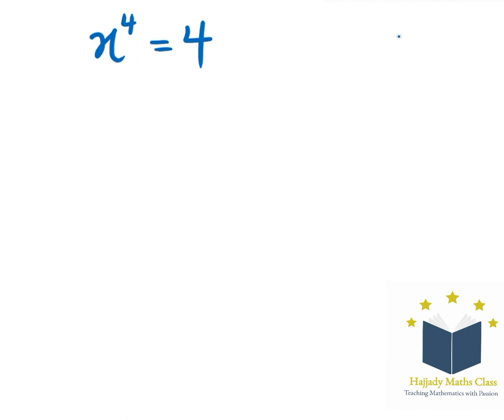we have x to the power of 4 written as x squared to the power of 2 minus 4 equals to 0.